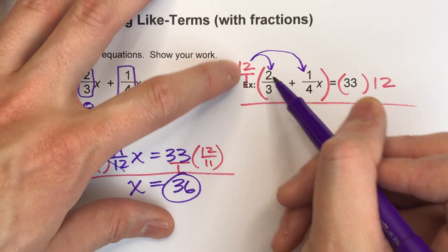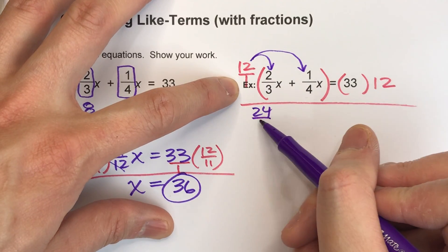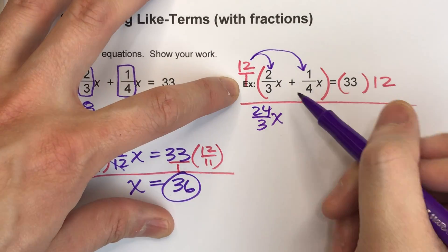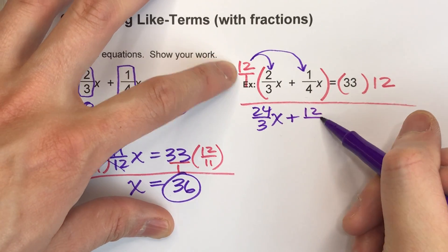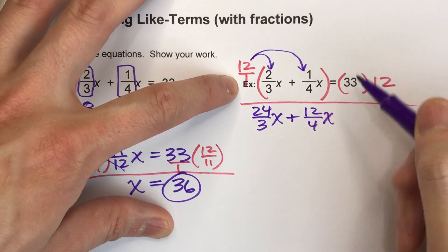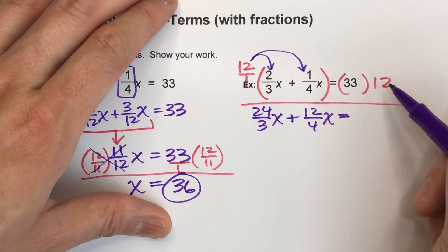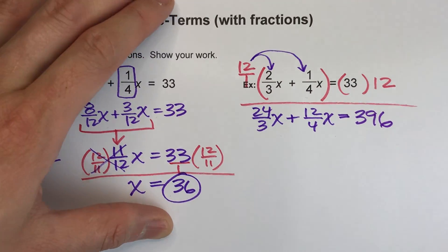So when I multiply fractions, I do the top times the top. 12 times 2 is 24. Bottom times the bottom, 1 times 3 is 3, and that's an x. Plus, top times top, 12 times 1 is 12. Bottom times the bottom, 1 times 4 is 4. 4x equals, now on the other side, 33 times 12, that's 396.